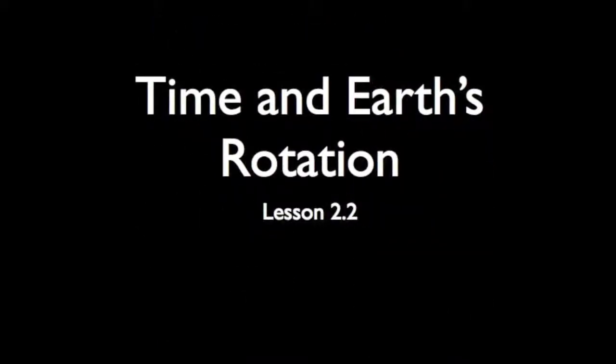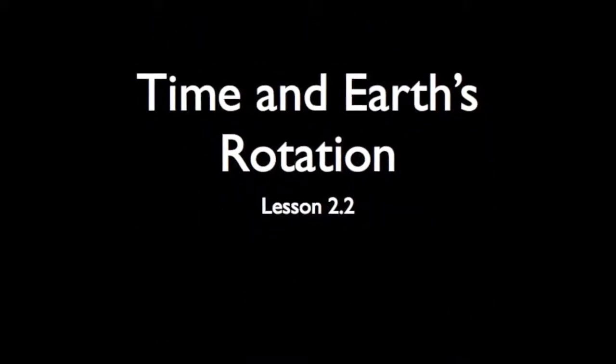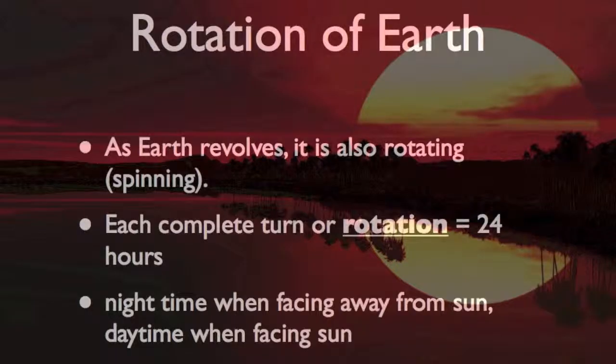Earth revolves around the sun in an oval-shaped orbit, but Earth also moves in another way. This motion explains why day and night occur. As Earth revolves around the sun, it is also rotating, or spinning in space. Earth rotates around its axis. Each complete turn, or rotation, takes about 24 hours.